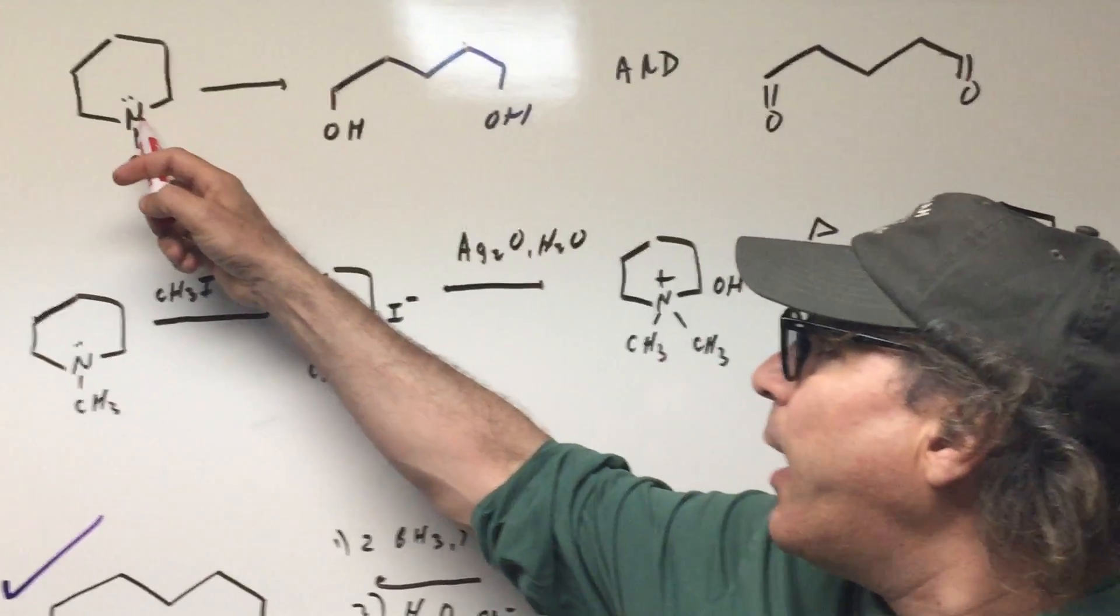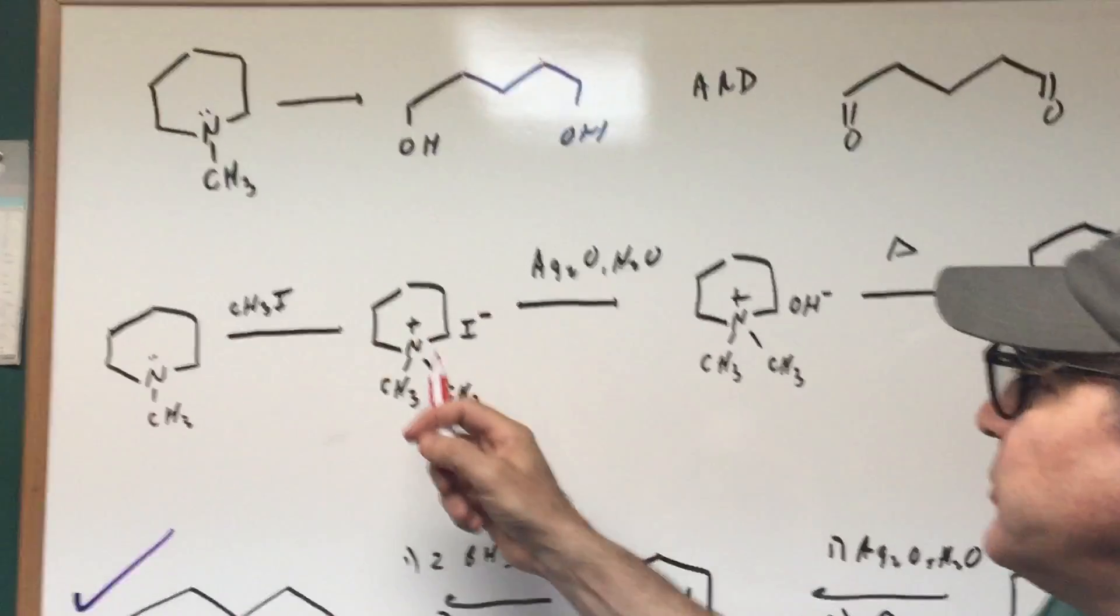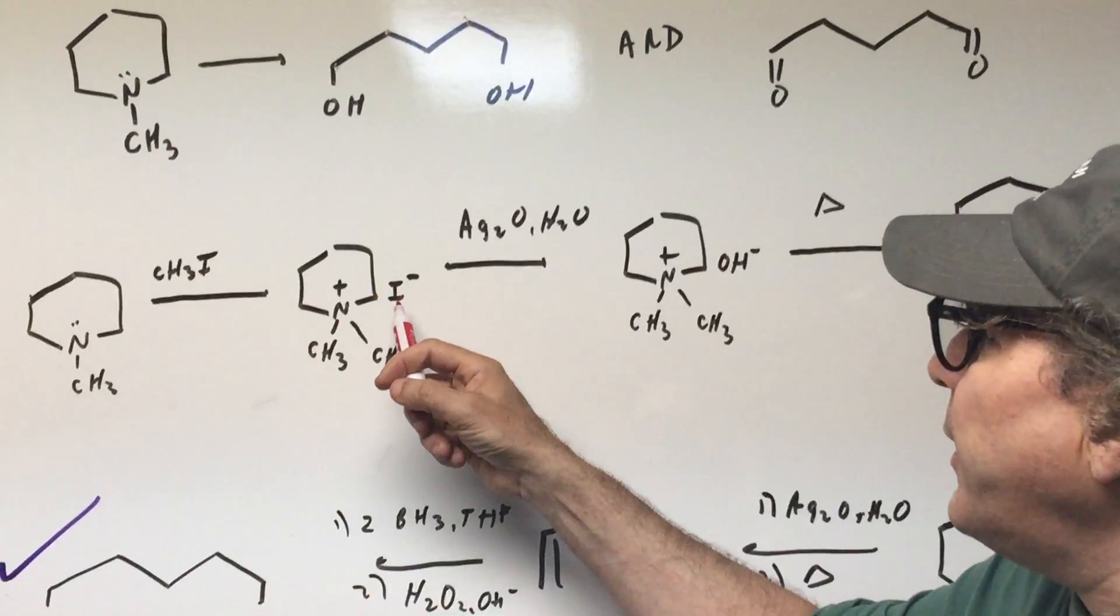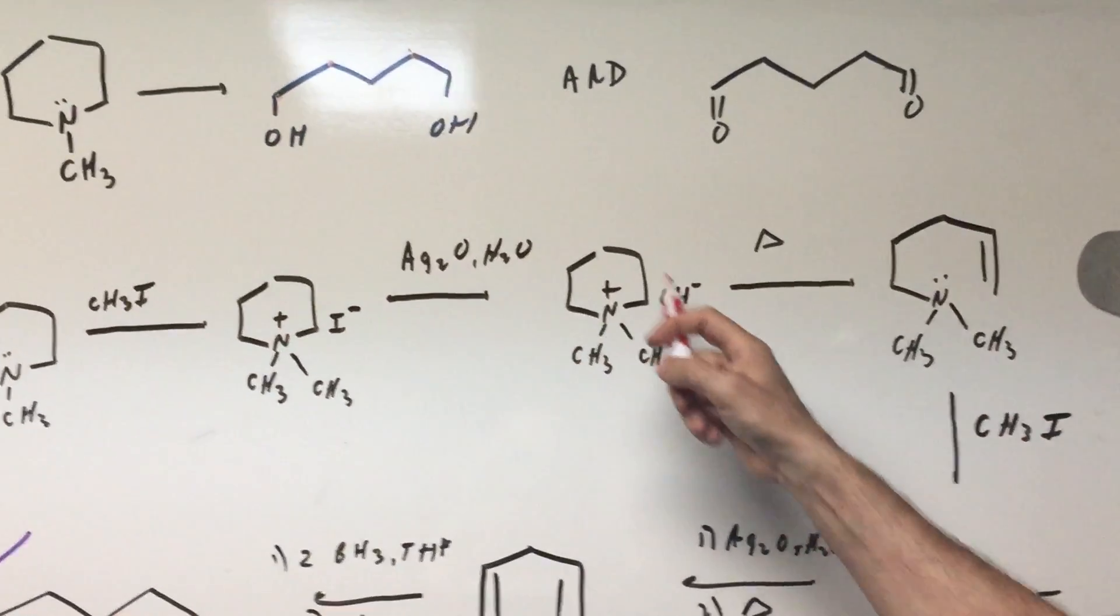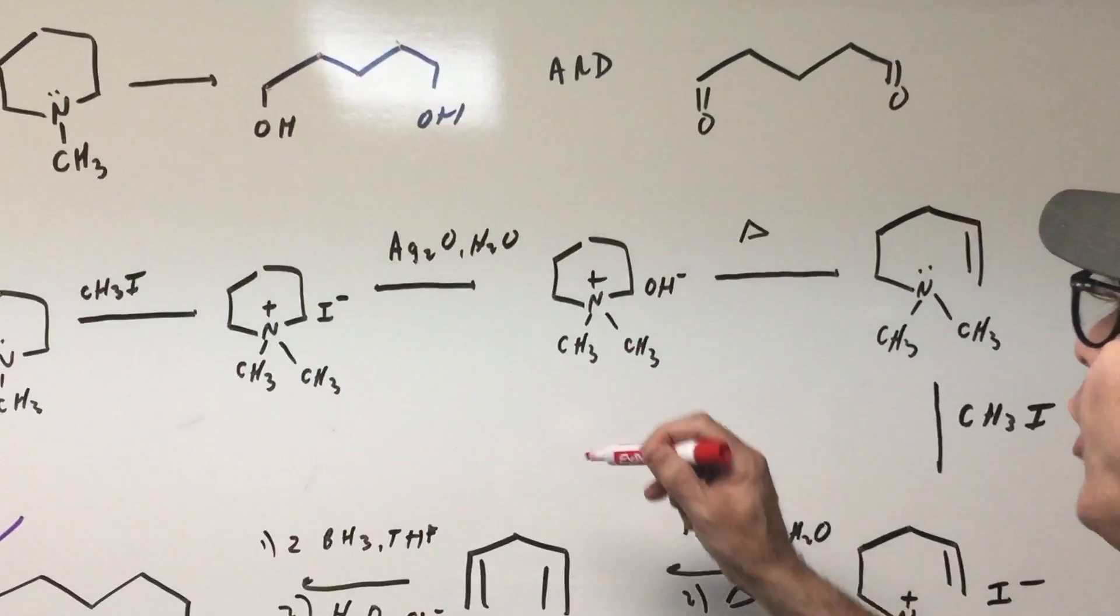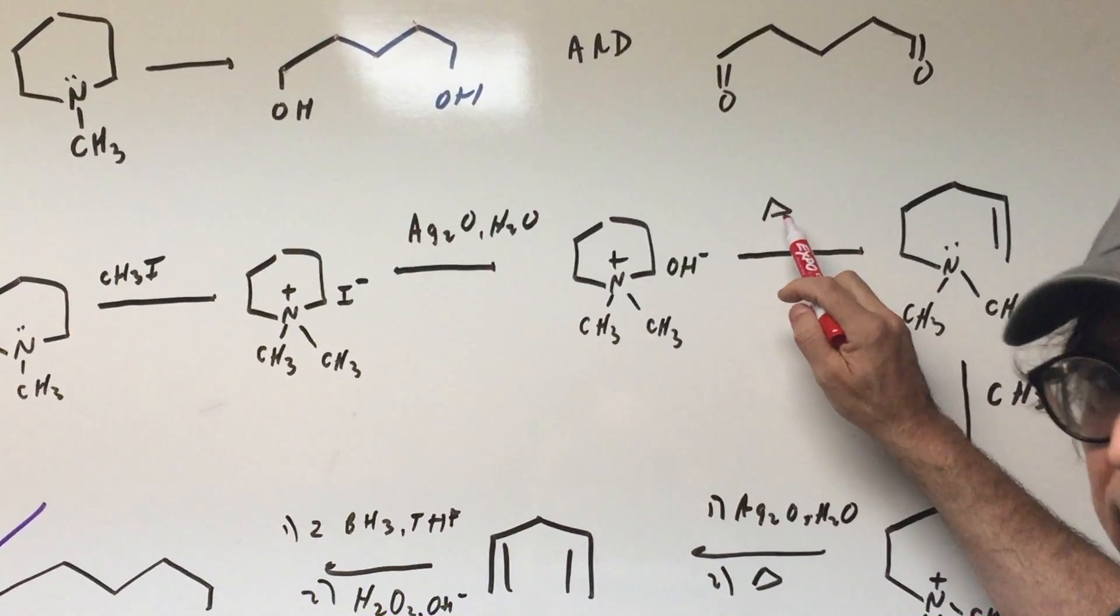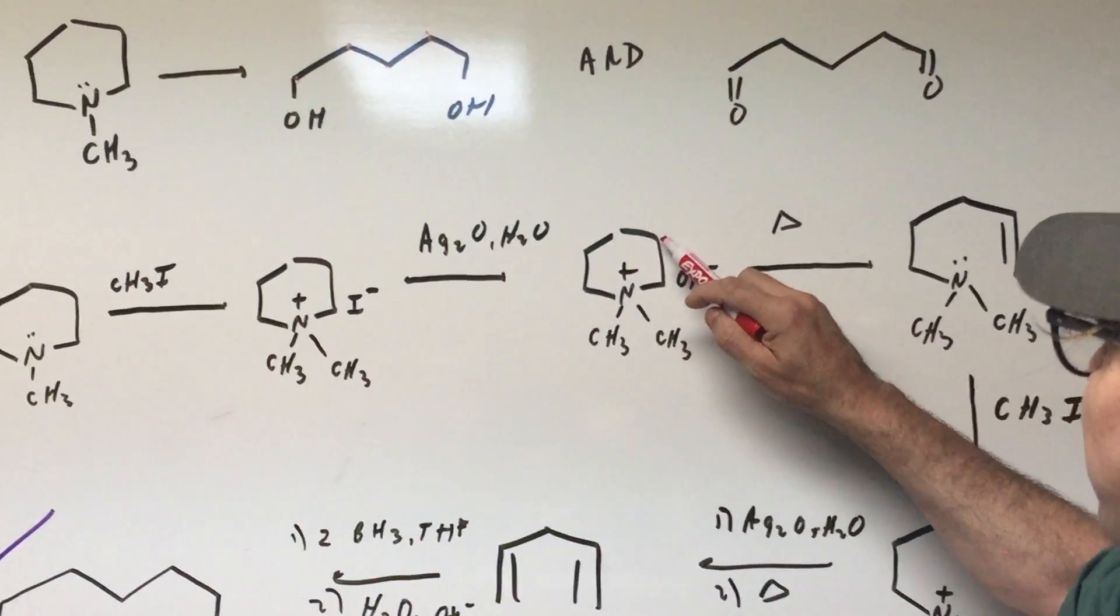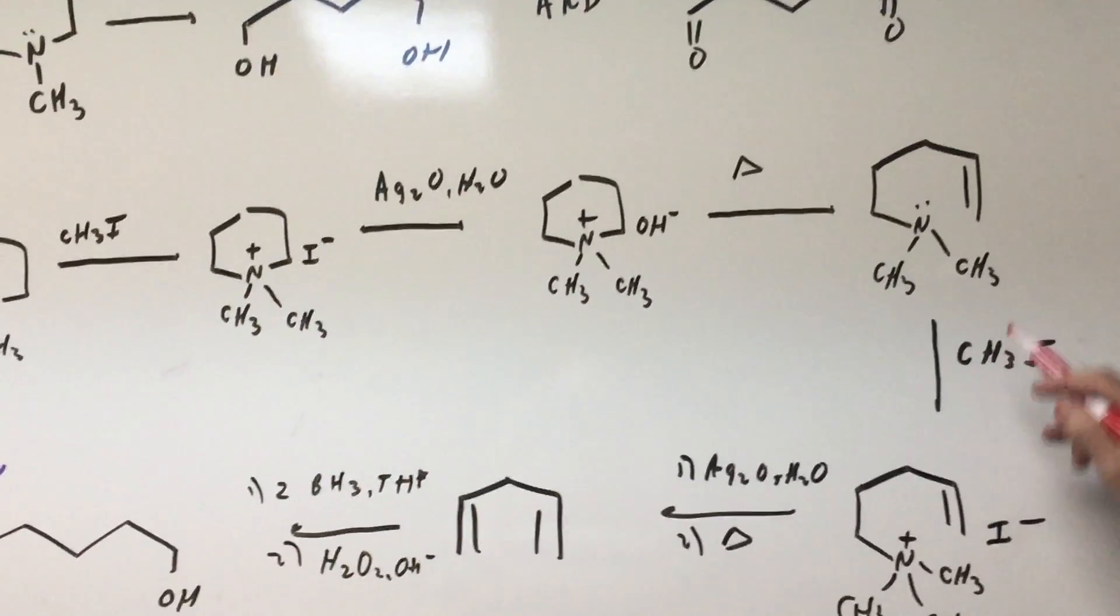I'm going to methylate it first. Once I methylate it as we did before, I treat it with Ag2O in water and that gives me my quaternary ammonium hydroxide. Now the grand finale. I heat it. If you remembered alpha beta, you take off the H at the beta, break the bond, and you get the less substituted alkene.